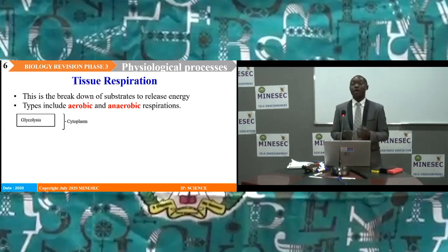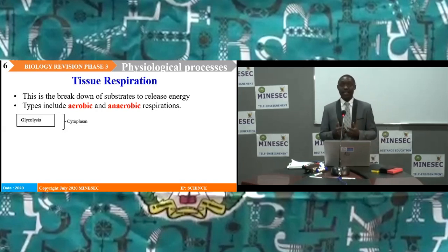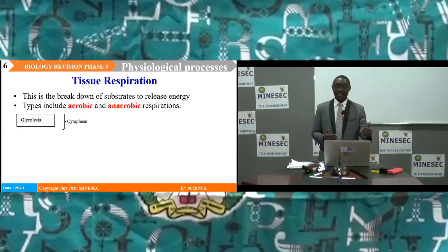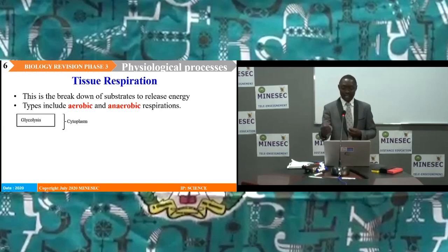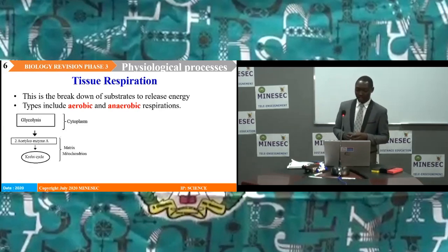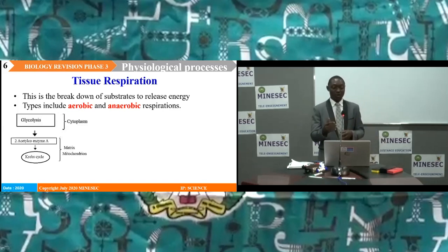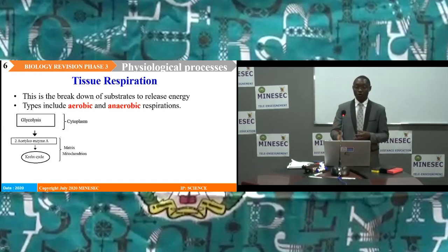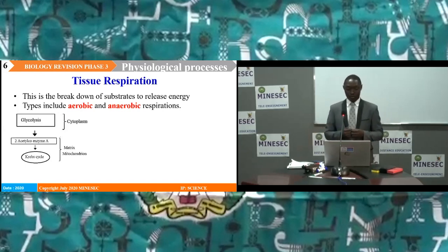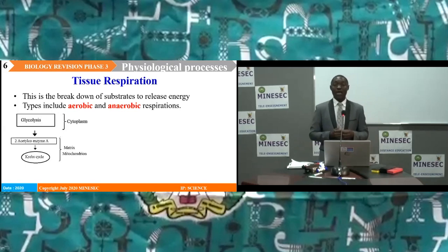Phosphoglyceraldehyde is oxidized to pyruvic acid. The fate of pyruvic acid depends on the presence or absence of oxygen. In the presence of oxygen, pyruvic acid is converted to acetyl-coenzyme A. Acetyl-coenzyme A then leaves the cytoplasm and enters into the mitochondrion where the Krebs cycle occurs.